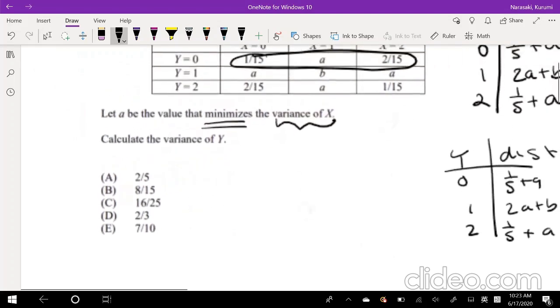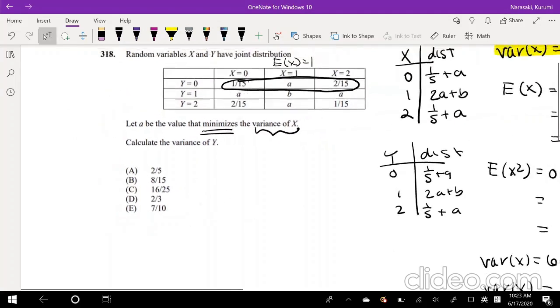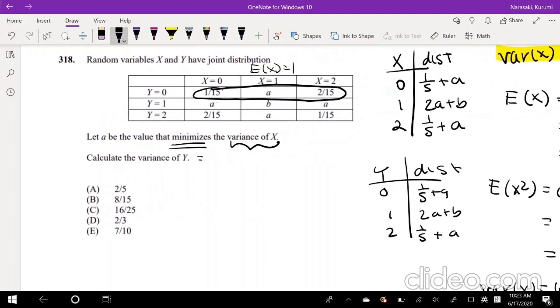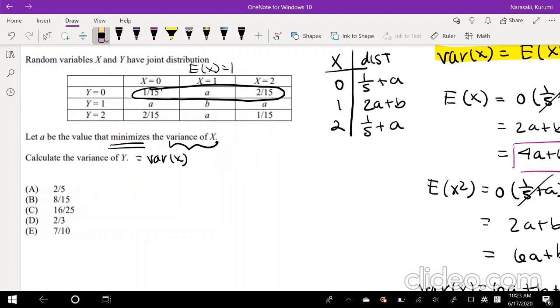But what do they ask you for? They ask you for the variance of Y. Well, it turns out the variance of Y is actually equal to the variance of X, because it's uniform. But I'll show it to you real quick. I started doing it right here. So we notice, what would be the values that Y can take? It can either be 0, 1, or 2. And what could be that distribution?